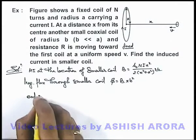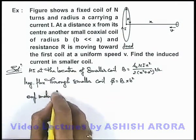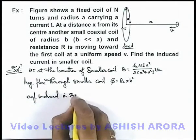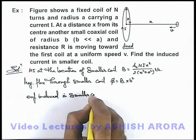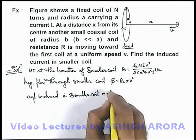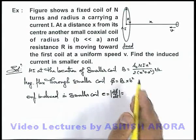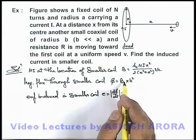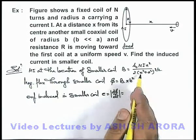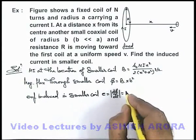then we can directly calculate the EMF induced in the smaller coil, which can be written as ε = |dφ/dt|. For this magnitude, we can take all the constant terms as is and differentiate the variable term.